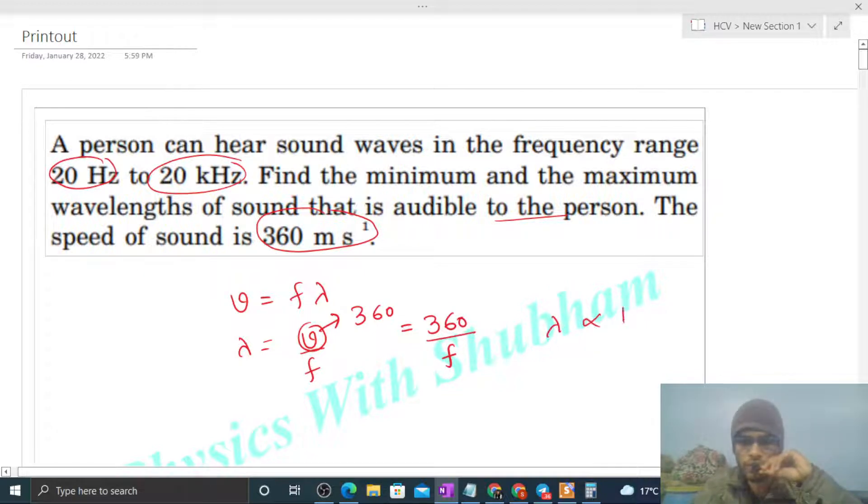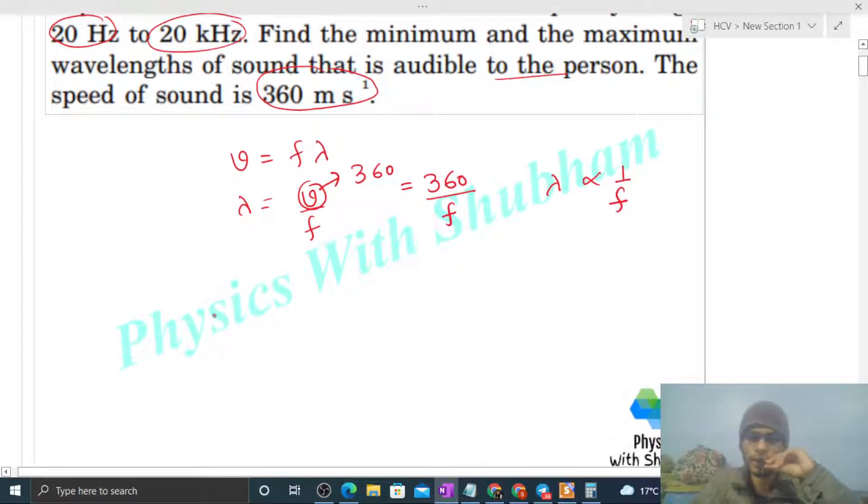So we can say wavelength is inversely proportional to frequency. What does that mean? It means minimum value of wavelength will be for maximum value of frequency, right? So minimum wavelength audible you will get at maximum audible frequency, and maximum audible frequency is 20 kilohertz.